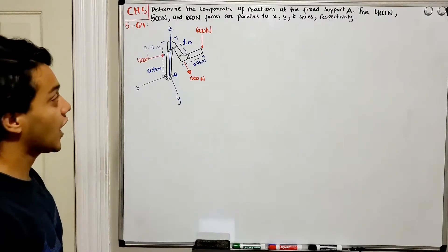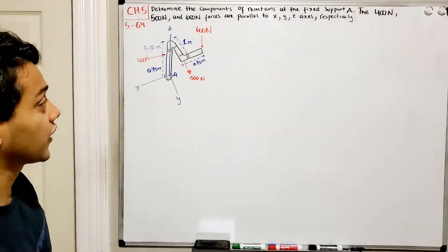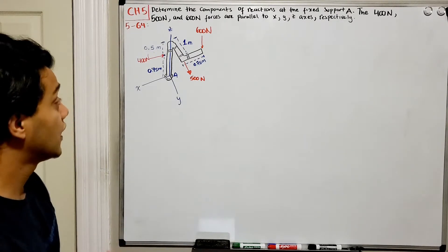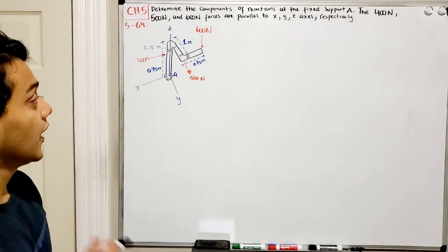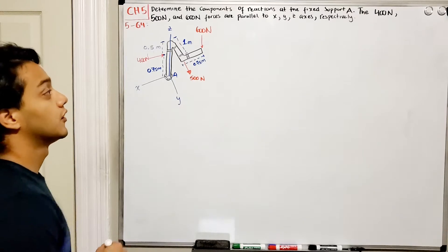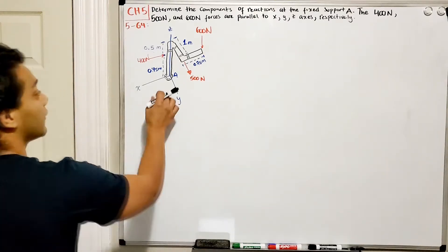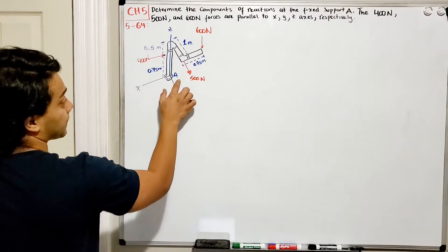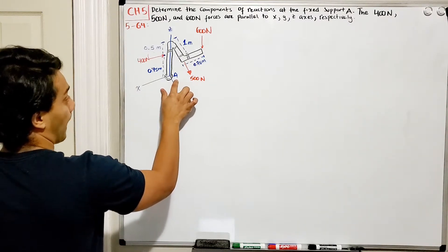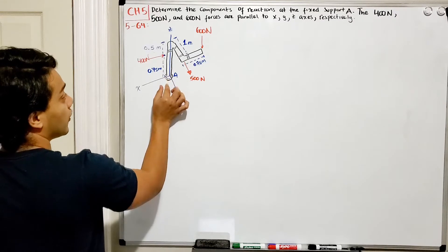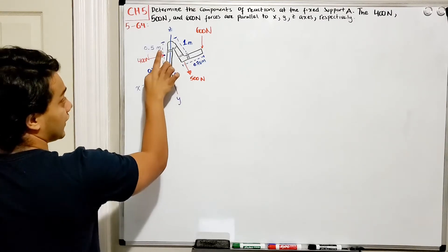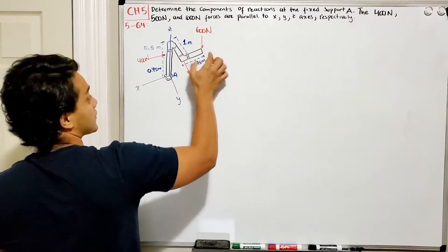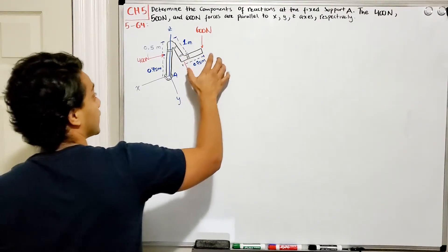Determine the components of reaction at the fixed support A. The 400, 500, and 600 Newton forces are parallel to the X, Y, and Z axes respectively. We have a tube supported by a fixed support at point A. The tube goes up along the Z direction, then comes along the Y direction, and then has some extent in the X direction.